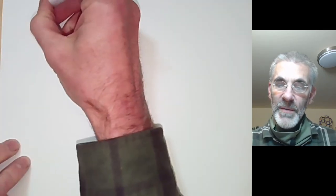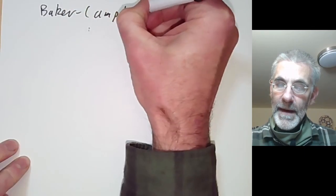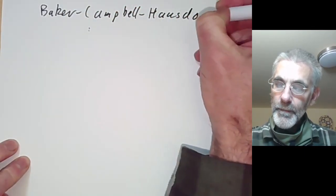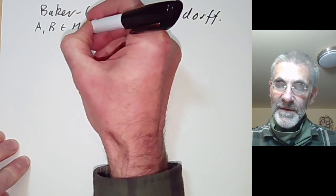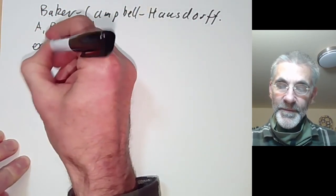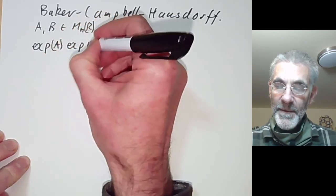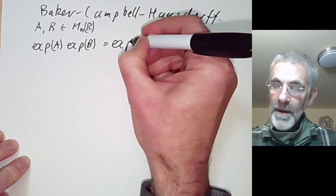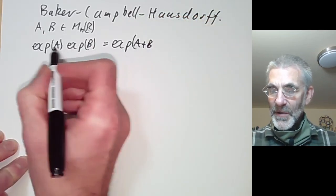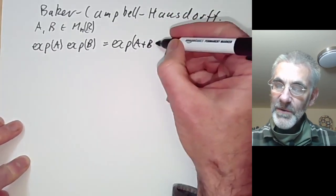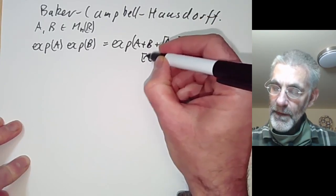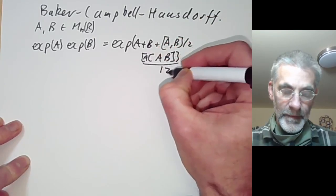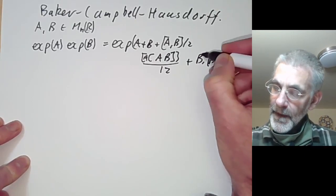This lecture is part of an online course on Lie groups and will be about the Baker-Campbell-Hausdorff formula. Suppose A and B are n×n matrices over the reals. As we saw in the last lecture, you can try writing exp(A)·exp(B) as exp(A+B), except that because A and B don't commute in general, this formula doesn't hold — you need to add correction terms and further higher order correction terms.